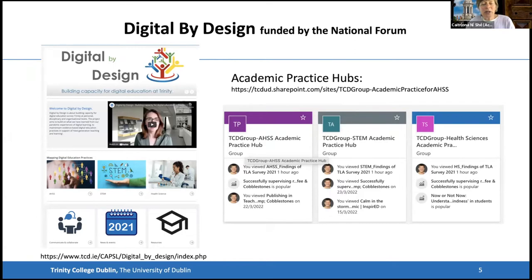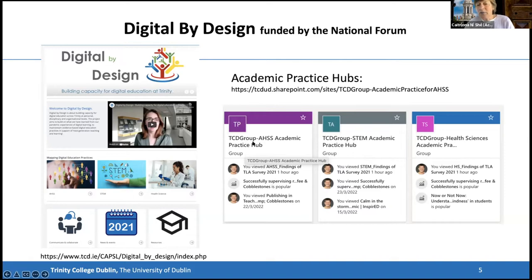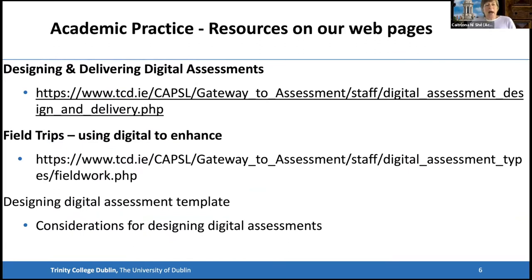As part of this project we've done a lot of research on what are the best digital education practices across different disciplines. We have a number of reports in their final stages of copy editing, available as draft reports at the moment, on digital education practices. One of our key outputs is to develop discipline-specific community hubs. We have three set up: one for AHSS, one for STEM, and one for Health Sciences. In these hubs we hope to enable academics to share their teaching experiences and practices.